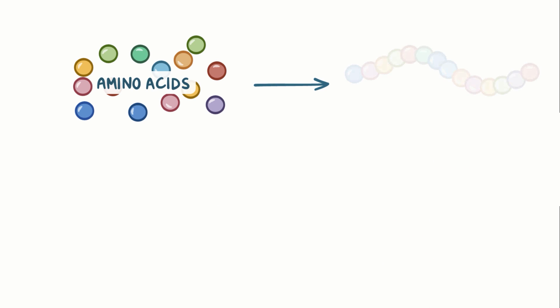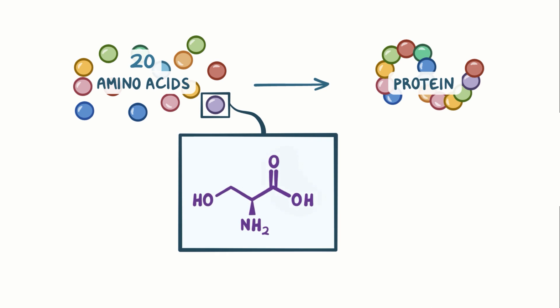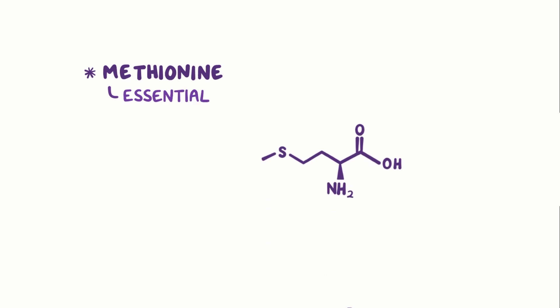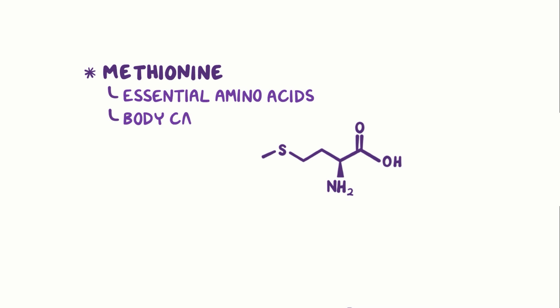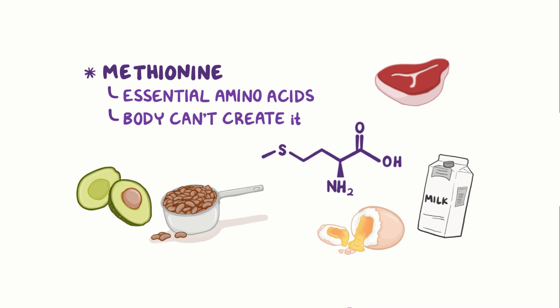Amino acids are the basic building blocks that make up proteins. There are 20 amino acids used in the human body, and they all contain a carboxyl group and an amine group. Methionine is one of the essential amino acids, meaning our bodies can't create it, so it must be acquired through protein-rich foods like meat, eggs, dairy, avocados, beans, and others.